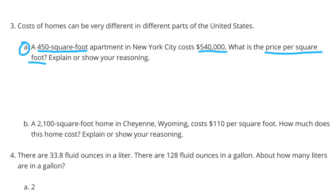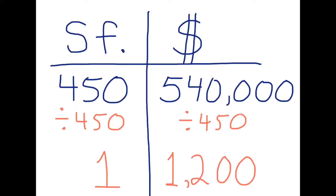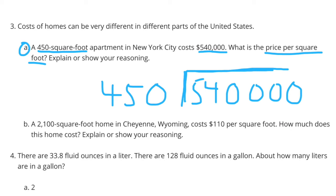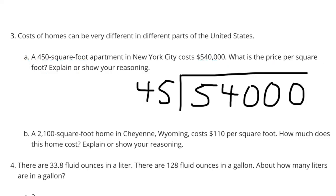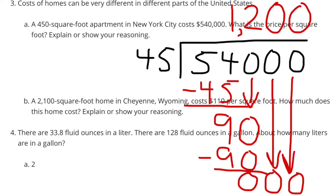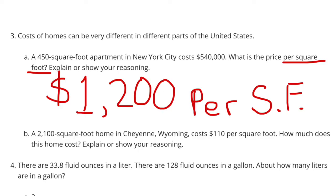Explain or show your reasoning. To determine the price per square foot, I'm going to divide $540,000 by 450. I can do this a little bit easier by canceling out each of these zeros. And now it reads $54,000 divided by 45. $54,000 divided by 45 is $1,200. The price per square foot is $1,200.